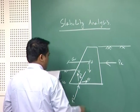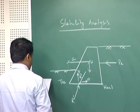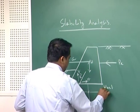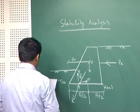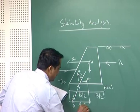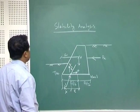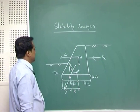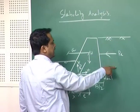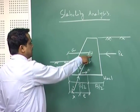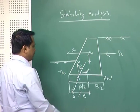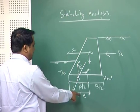This is the toe, this is the heel, and the total half of the base width is B/2. The distance from the center to the resultant is x, and the distance from the center to the resultant is e. The total resultant force R acts at a distance x from the toe.